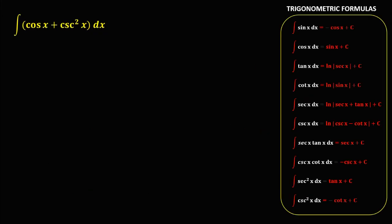So we have this given: the integral of cosine x plus cosine squared x, dx. First we need to integrate every term. So we have the integral of cosine x dx, plus the integral of cosine squared x dx, then simplify.